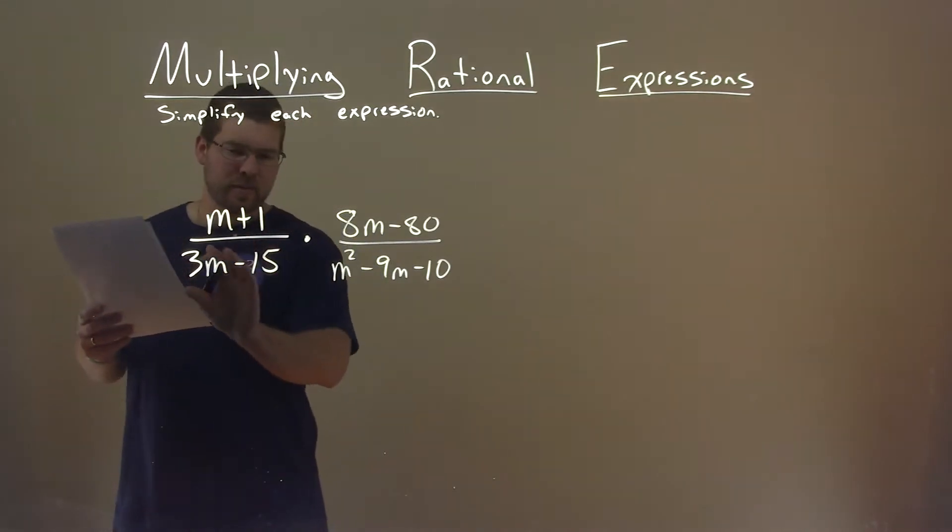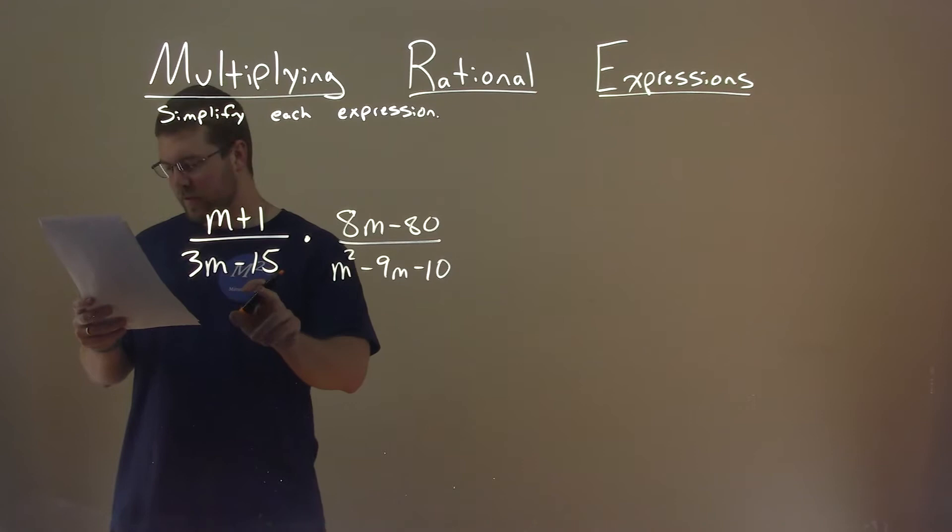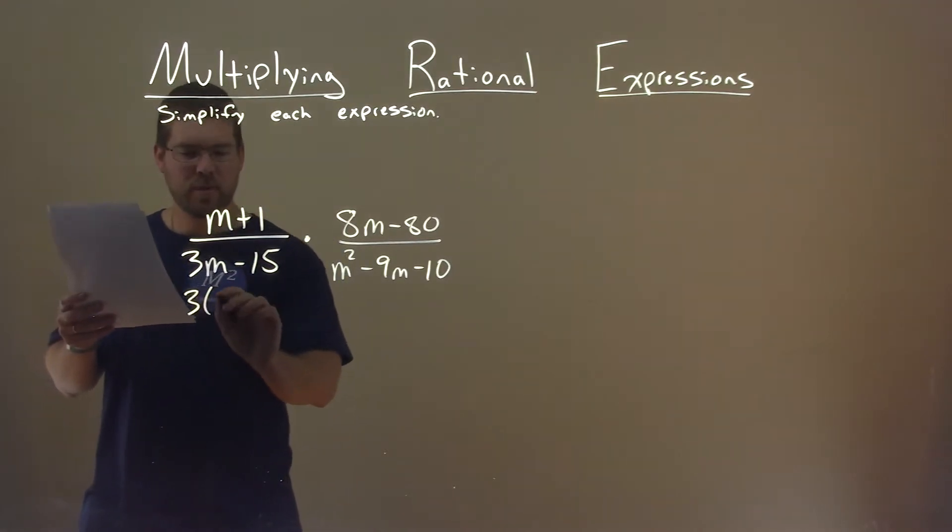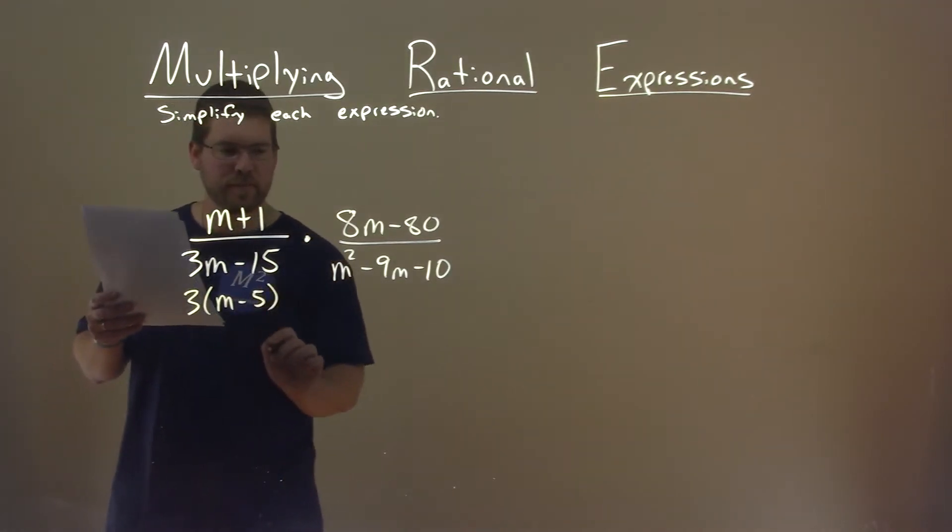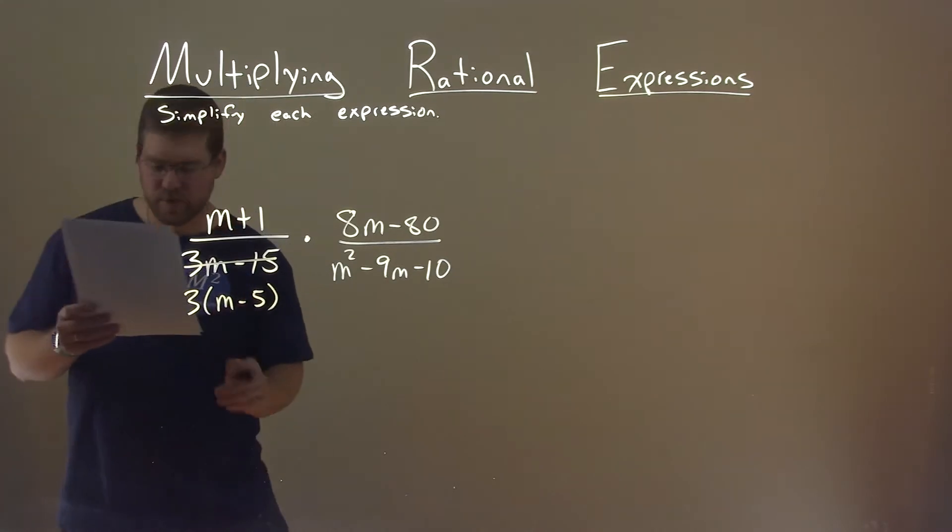Let's see if we can simplify each one of the four parts. 3m minus 15, I can pull out a 3 and I'm left with m minus 5 here. So let's cancel that out and rewrite it as such.